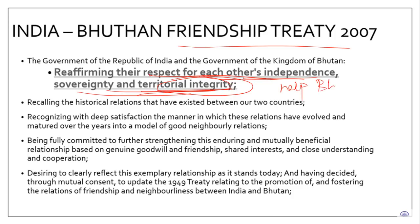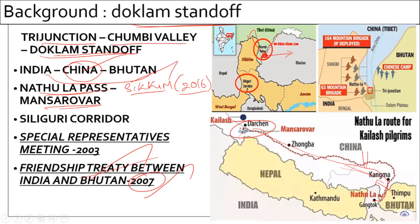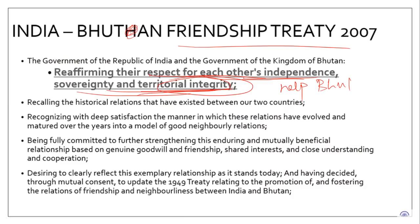In accordance with the India-Bhutan Friendship Treaty 2007, India decided to deploy troops. India also had its own interest: the Siliguri Corridor, known as the chicken neck. If China claims the Doklam region, their access to the Siliguri Corridor becomes possible. For nearly 70 days, both troops were stationed there, and diplomatic talks were happening. The Ministry of External Affairs later announced that the issue is resolved.